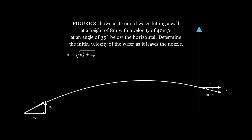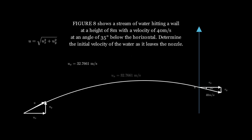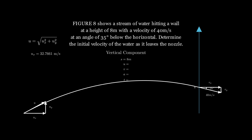To determine the initial velocity U, we first find the X and Y components — Ux and Uy — because by the Pythagorean theorem, U = √(Ux² + Uy²). Since Ux = Vx (no air resistance), and using simple trigonometry, Vx = 32.7661 meters per second, so Ux = 32.7661 m/s. To find Uy, we look at the vertical component: S = 8 m, and using trigonometry we find Vy, which is negative since it points downward.